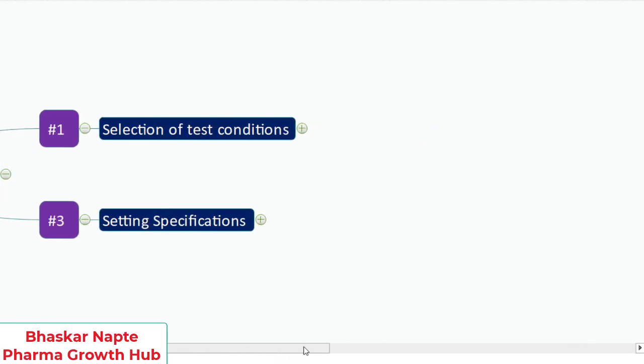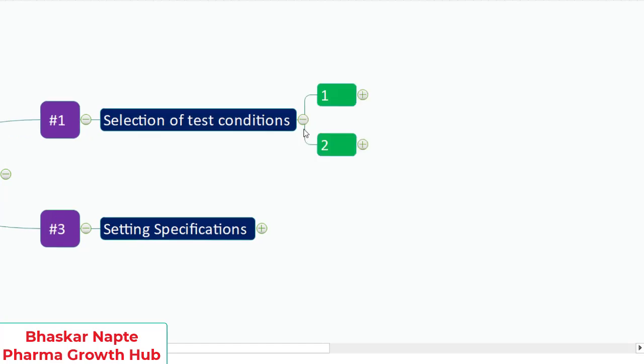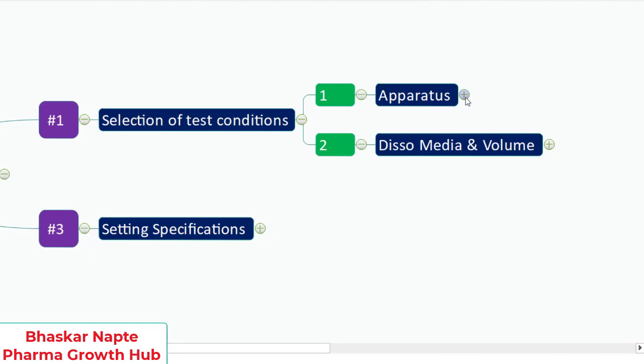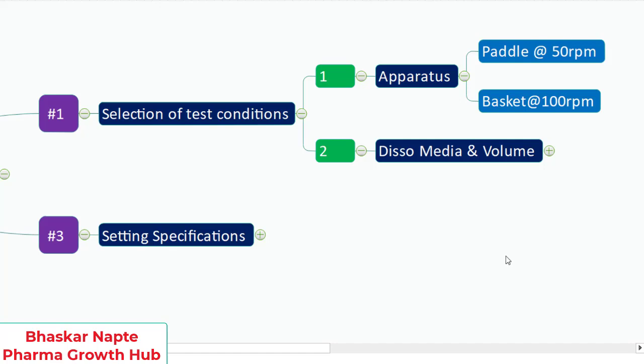I will also briefly discuss selection of test conditions. When it comes to selection of the test condition, it covers the selection of apparatus and the selection of dissolution medium and its volume. For apparatus selection with a generic immediate release drug product, two apparatuses are very common: paddle at 50 rpm or basket at 100 rpm. These are the preferred choices. If you want greater speed — 75 rpm with the paddle or 150 rpm with the basket — you need to justify it scientifically.